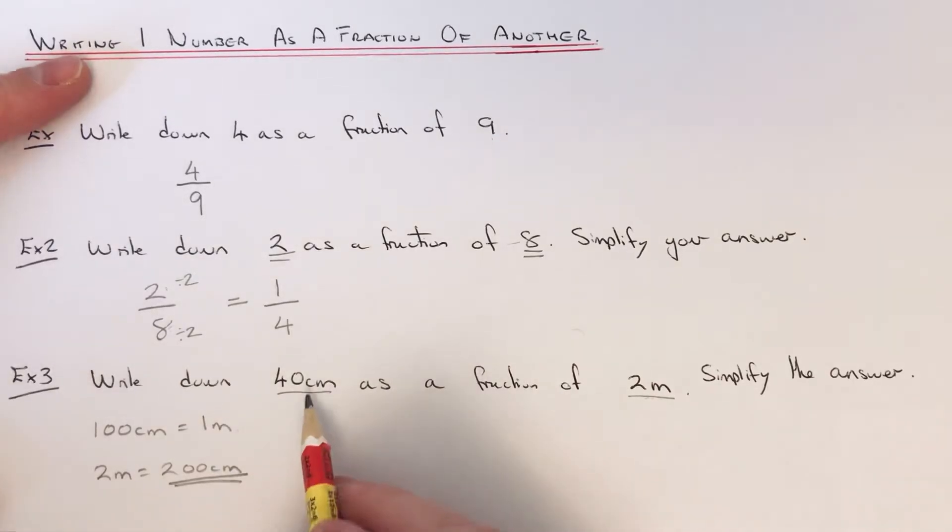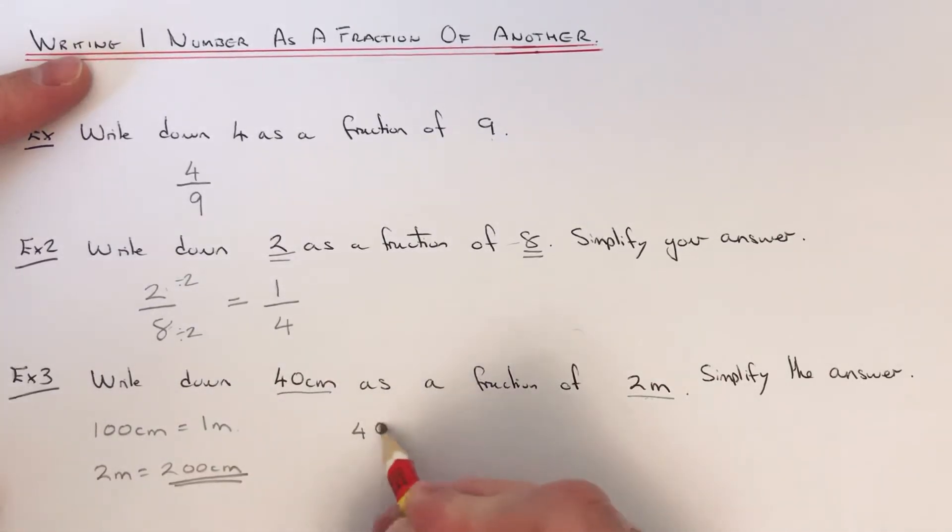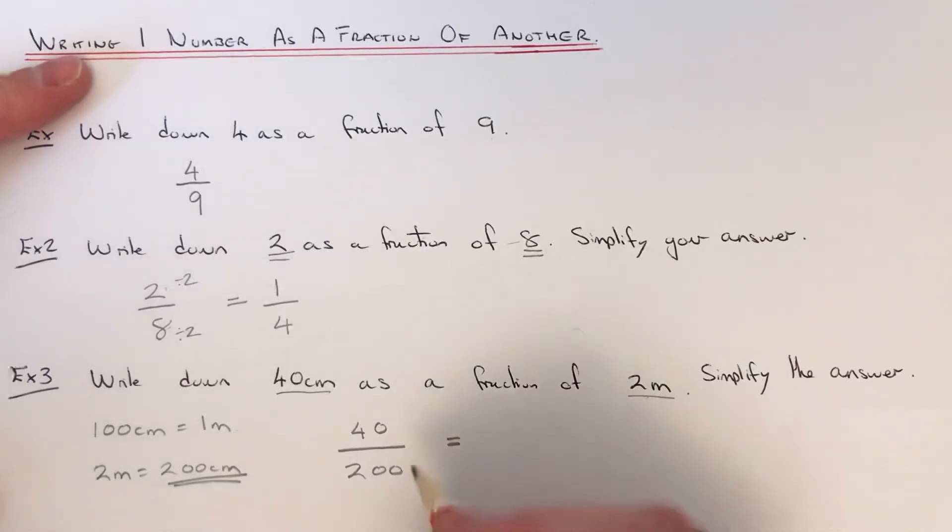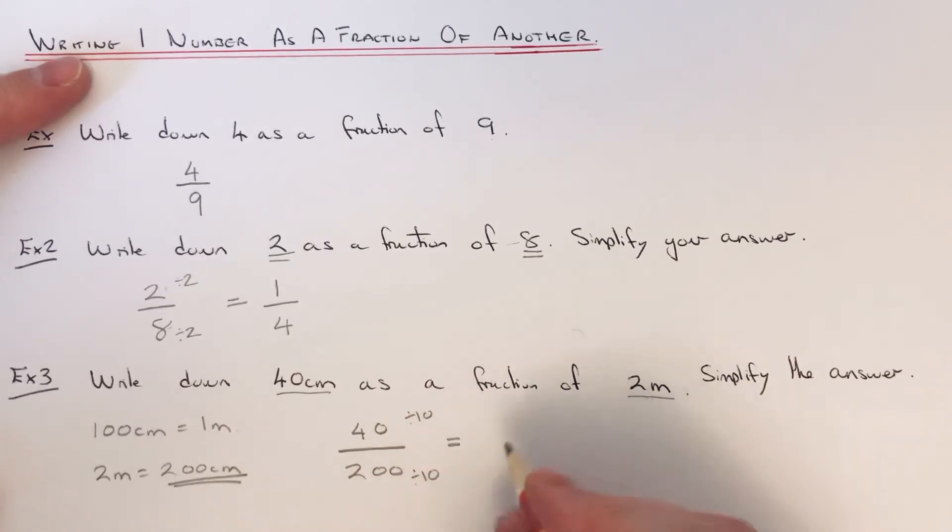So our fraction would be 40 out of 200, and then we just need to simplify this answer. Let's divide by 10 first because we've got zeros at the end. So 40 divided by 10 is 4, 200 divided by 10 is 20.